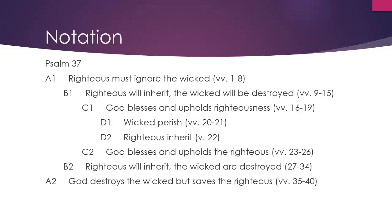The third section — God blesses and upholds righteousness — is virtually identical to what's happening in the third-to-last section. And then the two middle sections, which we're calling D1 and D2, say the wicked perish but the righteous inherit. The way chiasm is notated is how you see it on the left: A1 is related to A2, B1 is related to B2, C1 is related to C2, and D1 and D2 are similar in their arrangement.